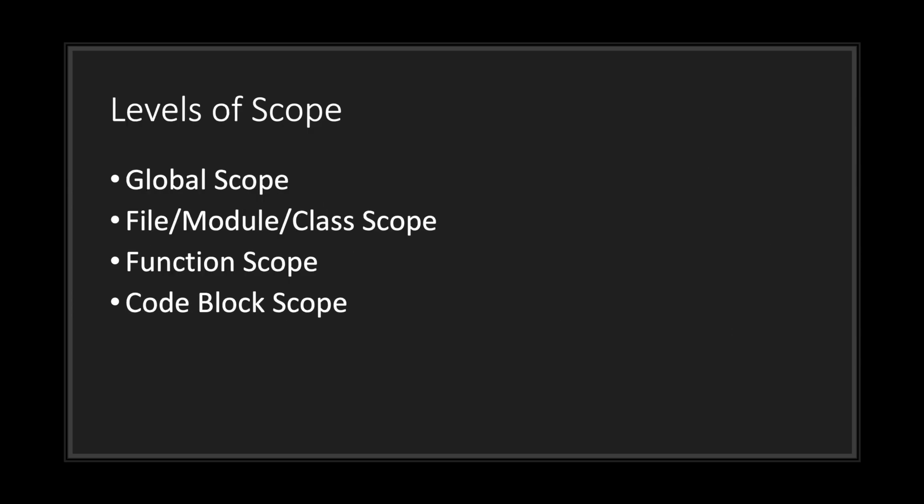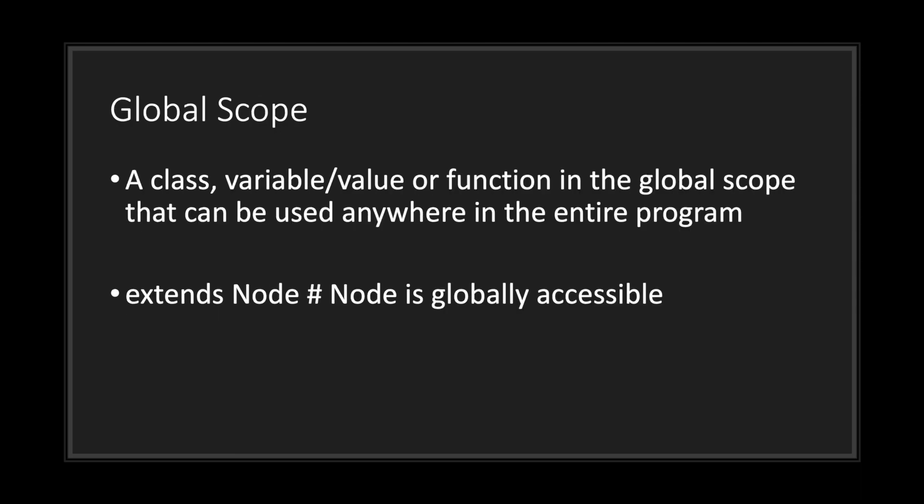There are many different levels of scopes. However, as a programmer you will benefit from understanding at least these four levels: global scopes, class scopes, function scopes, and code block scopes.